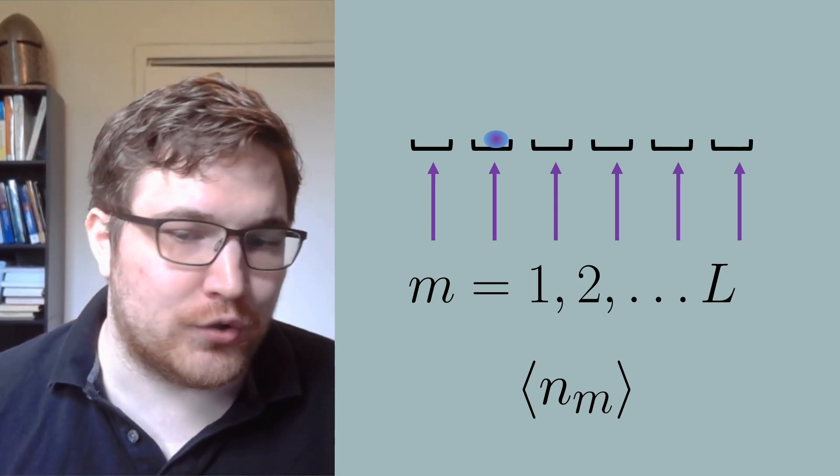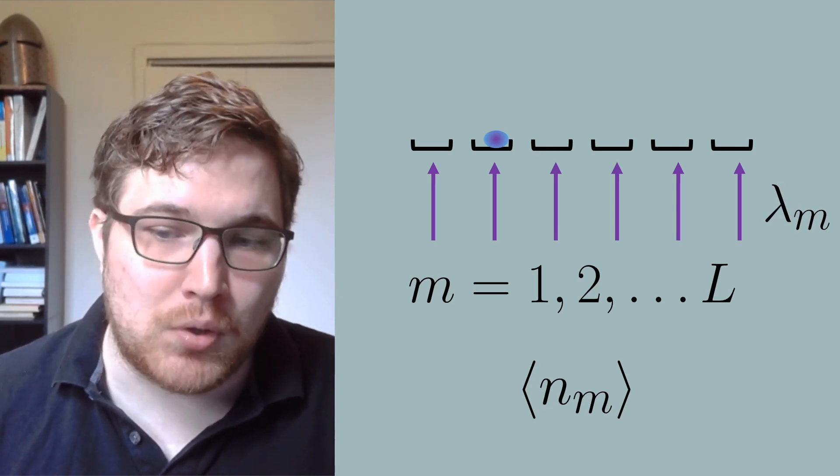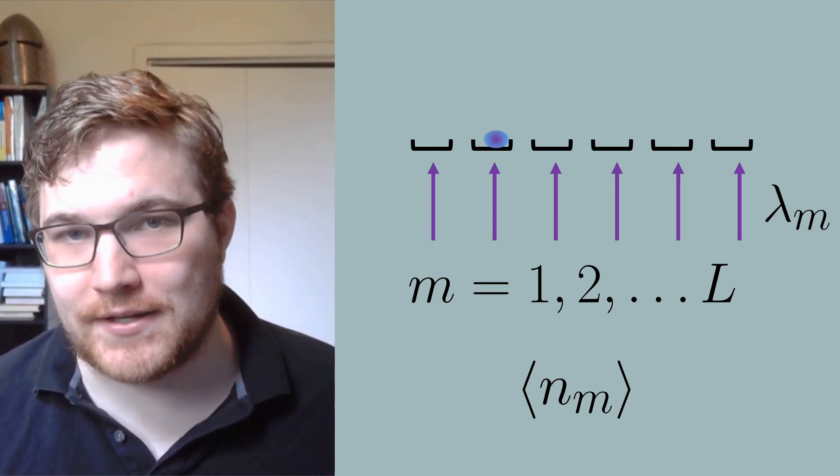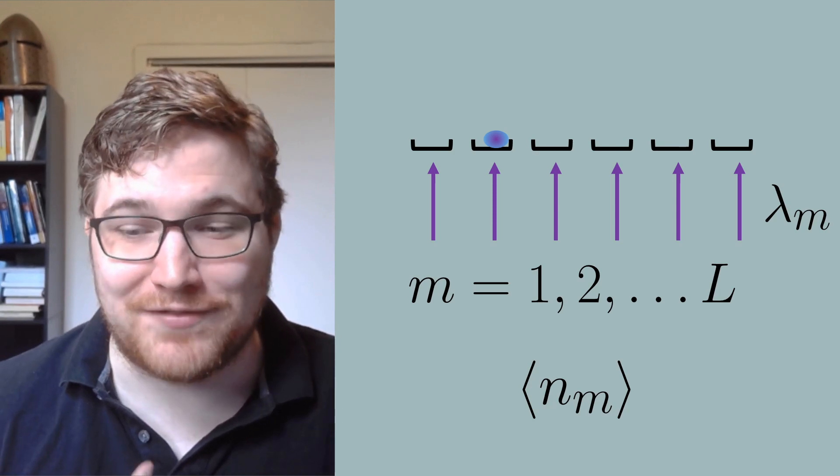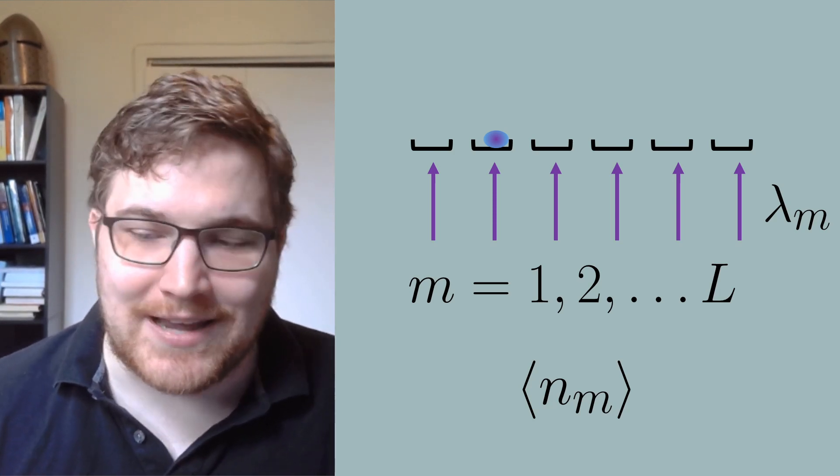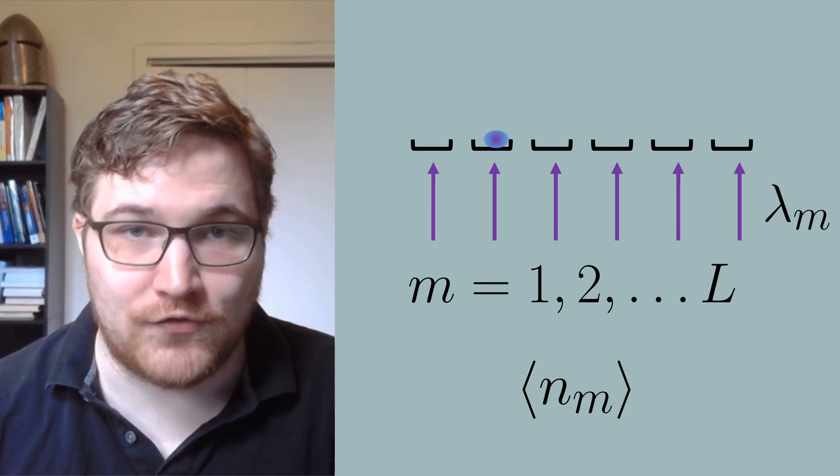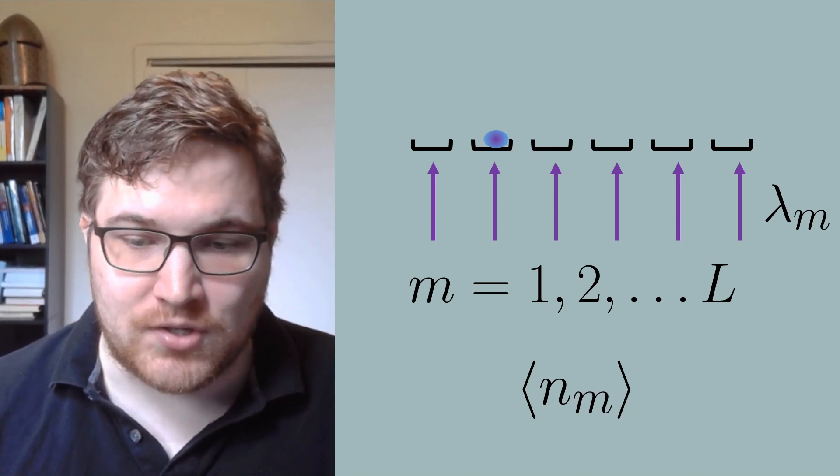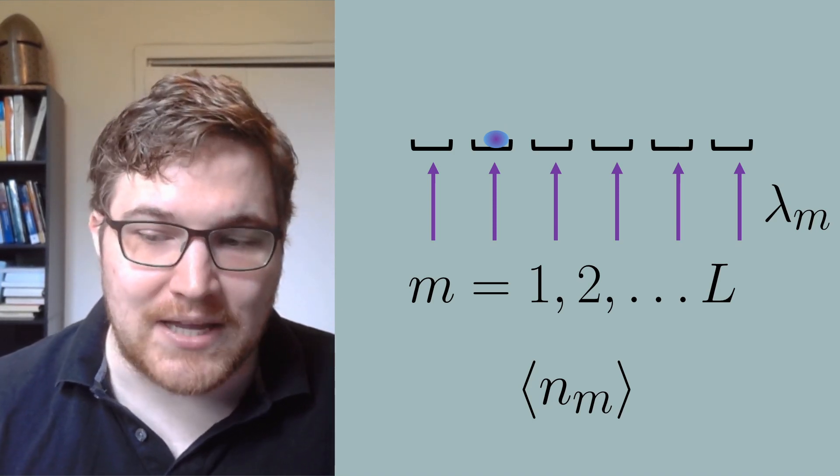We call this field strength lambda for convenience, with a label m telling us that it could be different at different lattice sites. For the sake of our example, we will assume that the relative height of the lattice site tells us the relative energy difference between two on-site potentials. In our case, all the lattice sites are at the same height with each other because the field in this example is equal everywhere along the lattice.